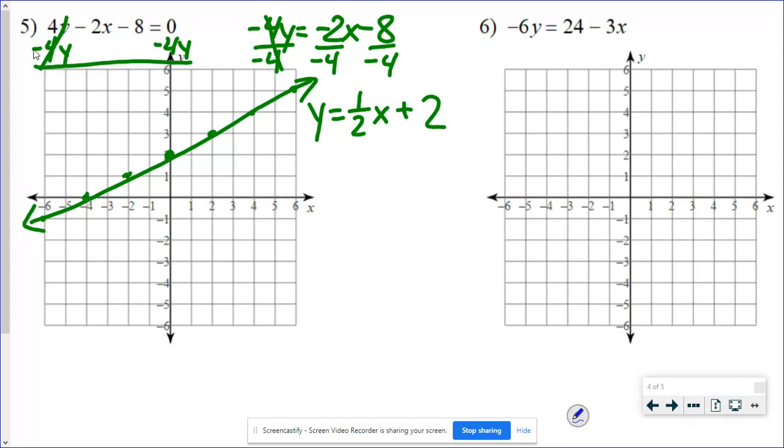The y is almost by itself. I just have to get rid of this negative 6. So everybody's going to get divided by negative 6. It's not all in the right order for what I'd like, but I'll have y equals.